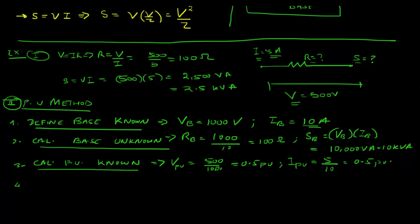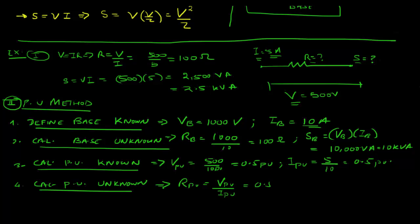Step four: calculate per unit for the unknown quantities. R_pu = V_pu / I_pu = 0.5/0.5 = 1 per unit. And S_pu = V_pu × I_pu = 0.5 × 0.5 = 0.25 per unit.